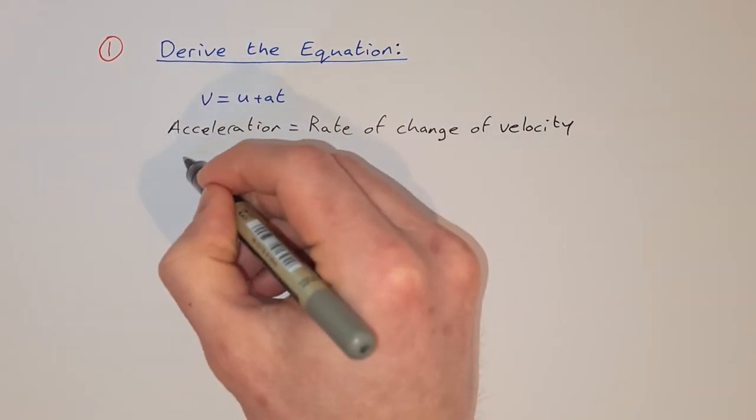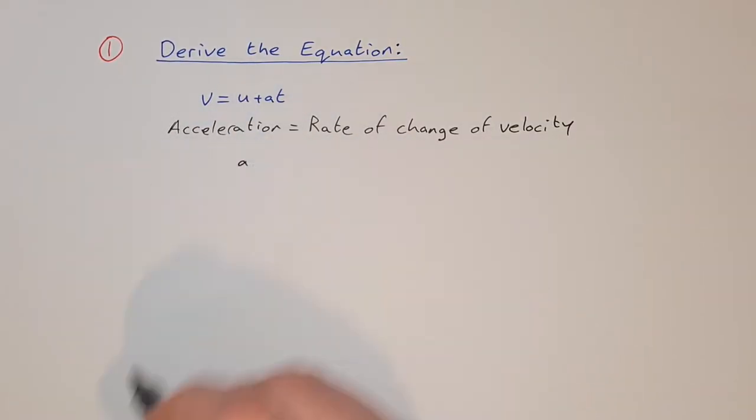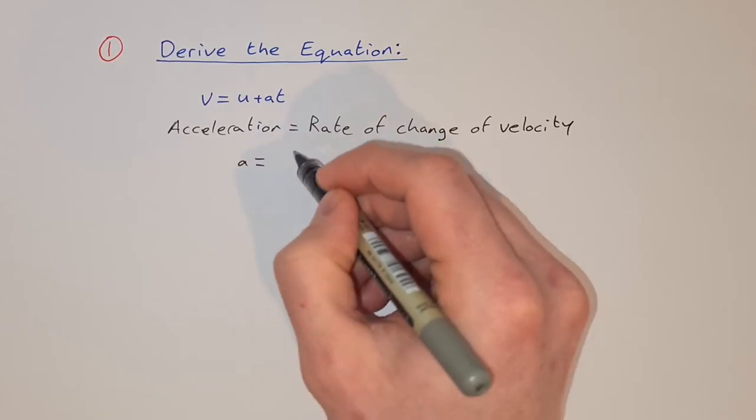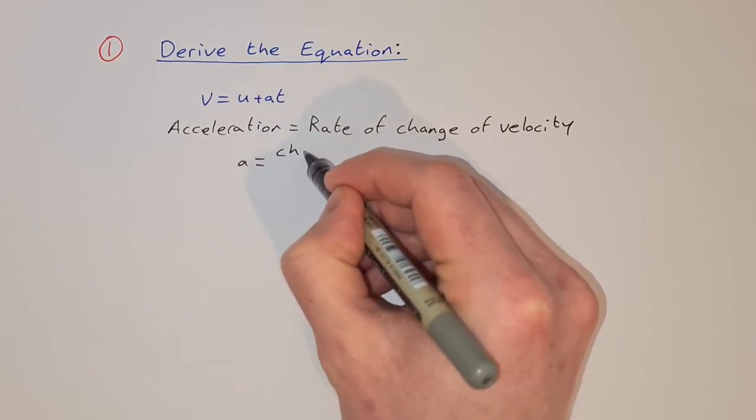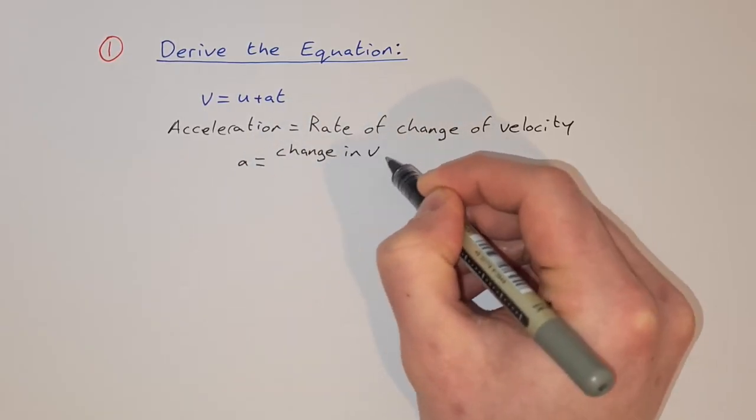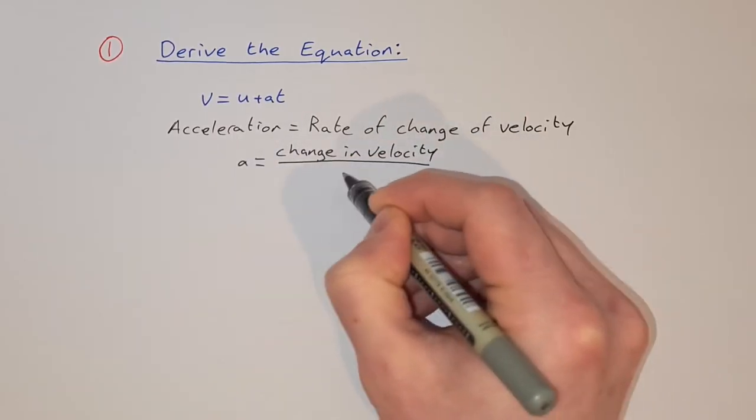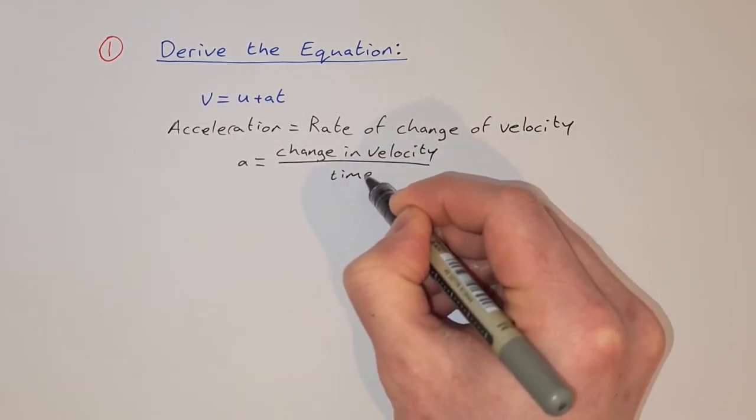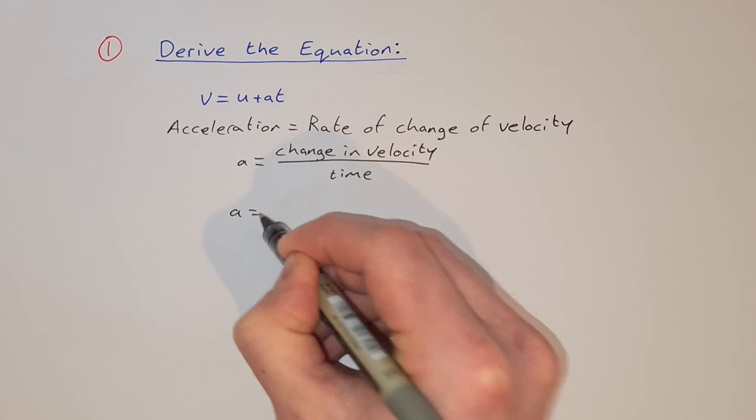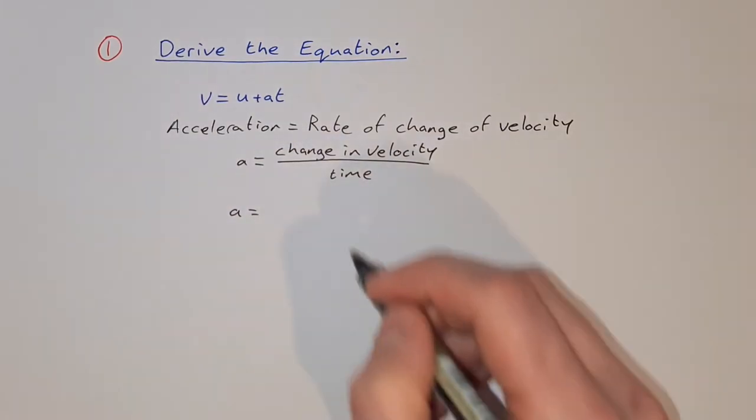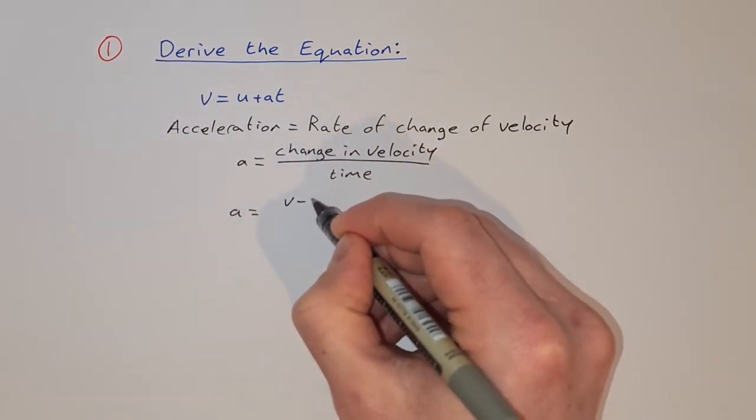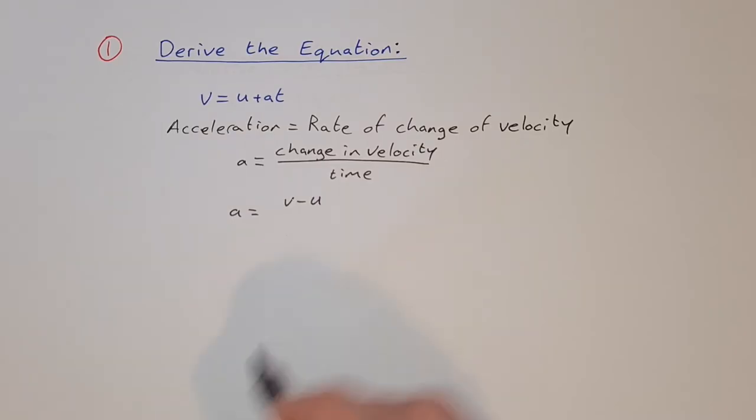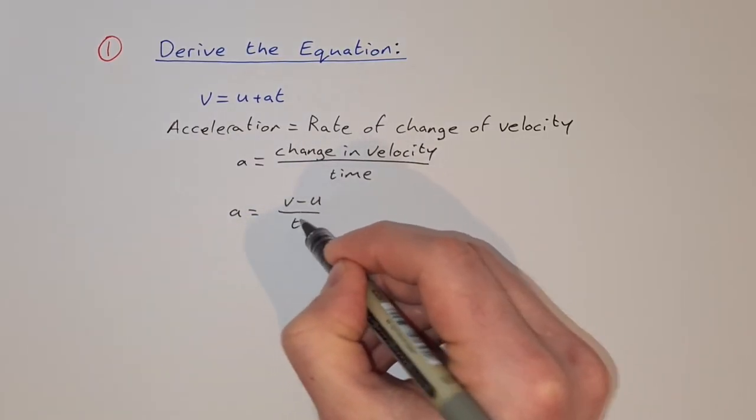So that means acceleration, then we can substitute in, just say a, is equal to the change in velocity divided by time. So the change in velocity is going to be our final velocity minus our initial velocity. So it's v minus u and time is t.